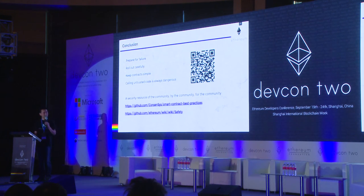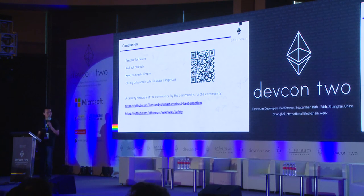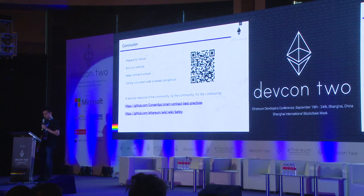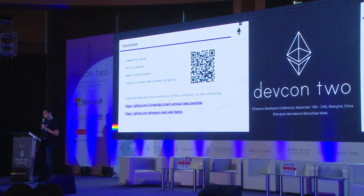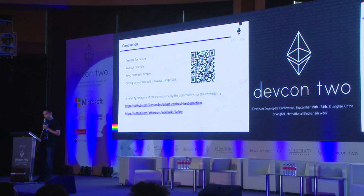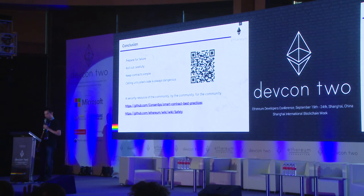To recap, some of the main points for smart contract security are: prepare for failure, roll out carefully, keep contracts simple, and remember that calling untrusted contracts is always dangerous. The danger may seem small, but if an attacker finds and exploits a bug in a compiler targeting the EVM, they are likely to do much more damage if their untrusted code is executed. Here are the links to a security resource of the community, by the community, for the community. I also have slides on denial of service and pull-over-push, or can take two questions in the remaining three minutes.